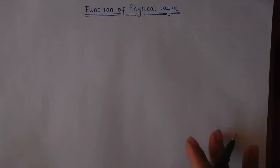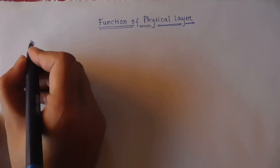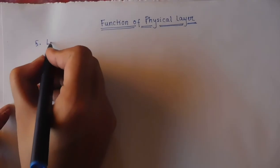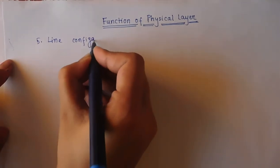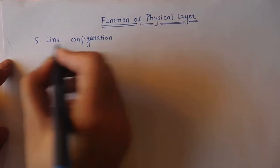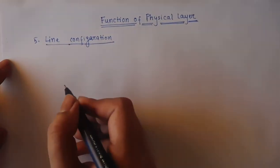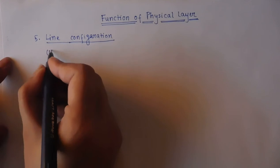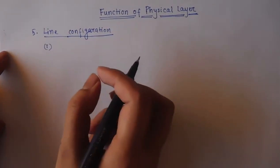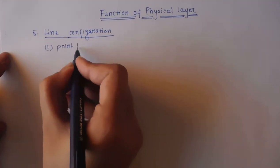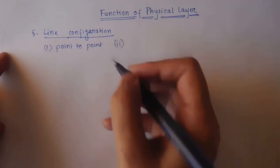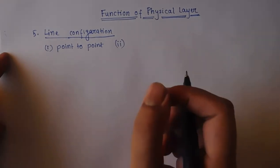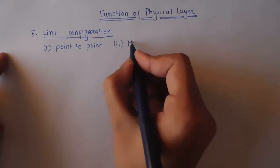The next function is line configuration. There are two types. If two devices are connected through a dedicated link, it is called point-to-point configuration. If a shared link connects several devices, it is called multipoint configuration.